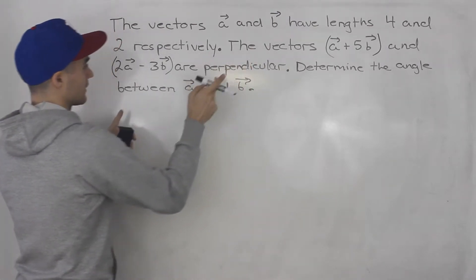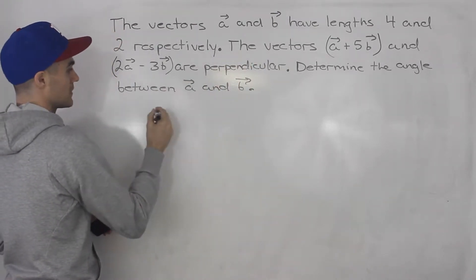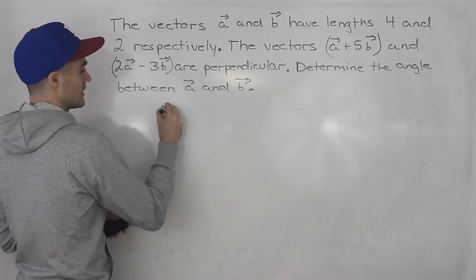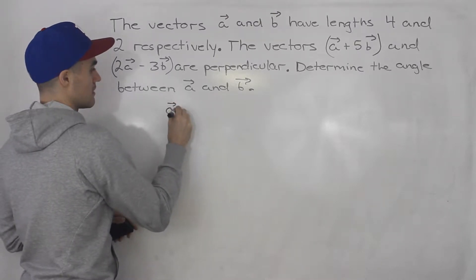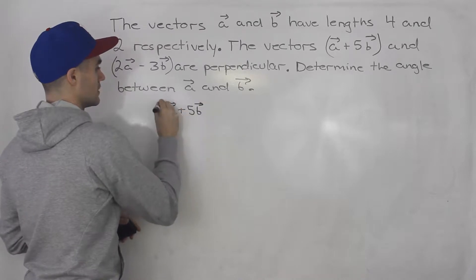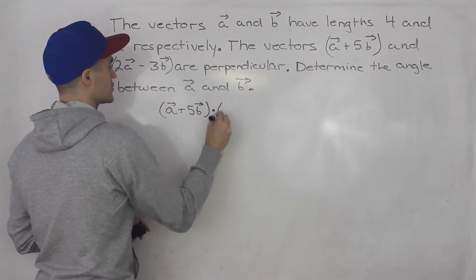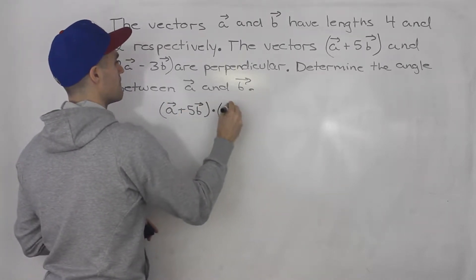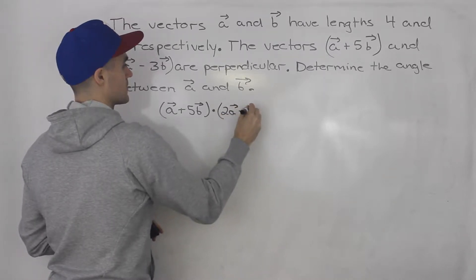These two brackets are two vectors, and if they're perpendicular what does that mean? It means that the dot product between them is 0.